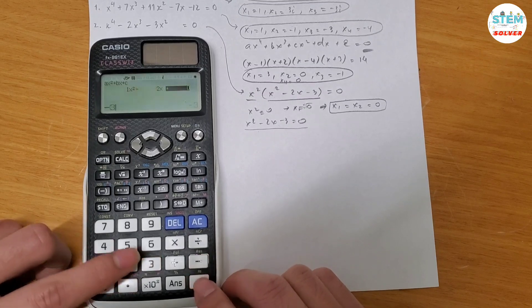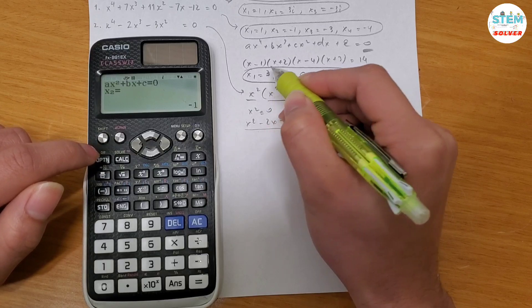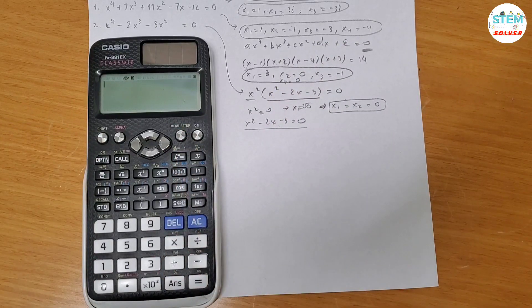1, negative 2, negative 3. You got 3 and then negative 1. So this is 3 to be clear. Alright? Hope it helps. That's it!